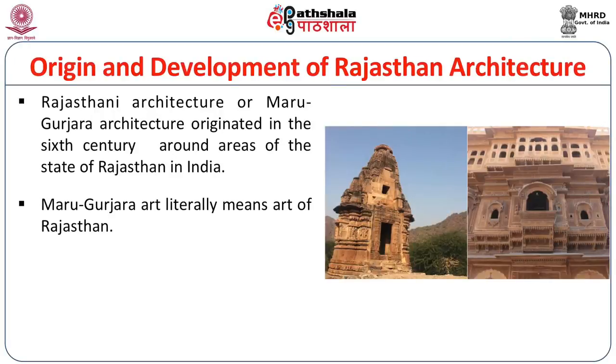Around the 6th century CE, Rajasthani architecture developed in and around the desert region of Rajasthan, mainly in areas such as Osea in Jodhpur district and Kiradu in Barmer district, with an architectural style of temple called the Marugurjar style. Over a period of time, this architecture got elaborated, and you have some of the best haveli architectures and also some of the finest secular architecture in terms of forts.